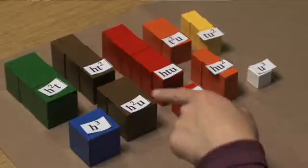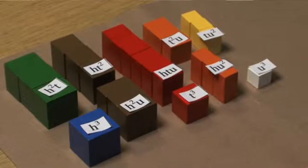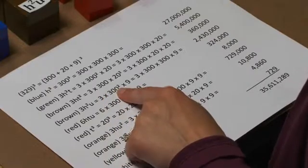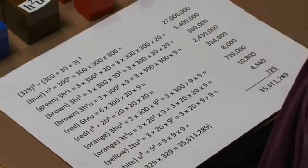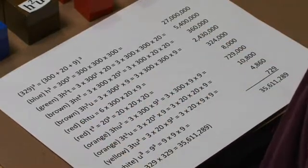Then we would have our 100 squared times units. We would have 3 of those as well. So it would be 3 times 300 squared times 9. And our product would be 2,430,000.